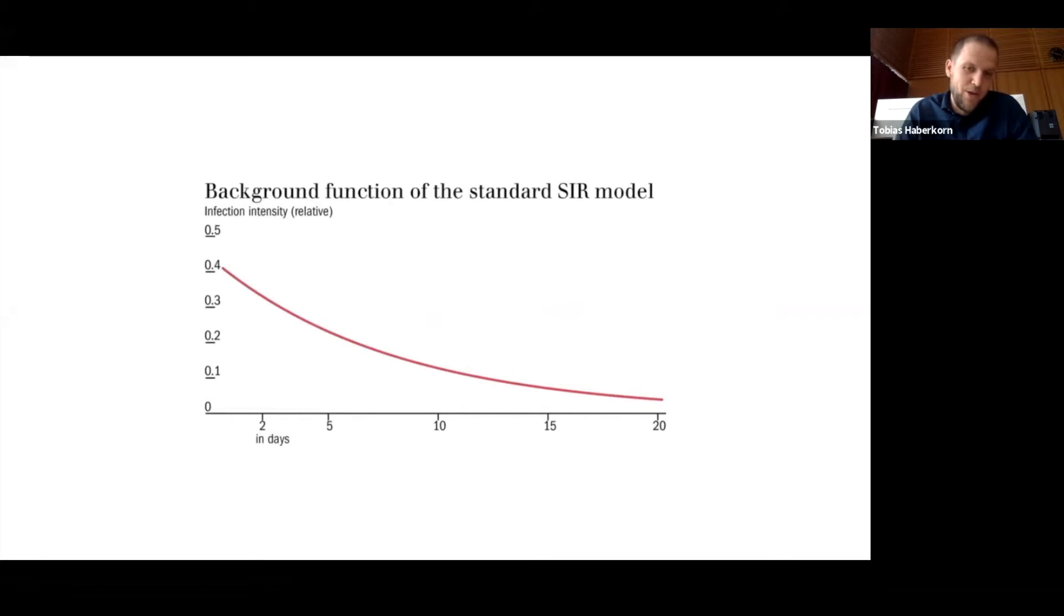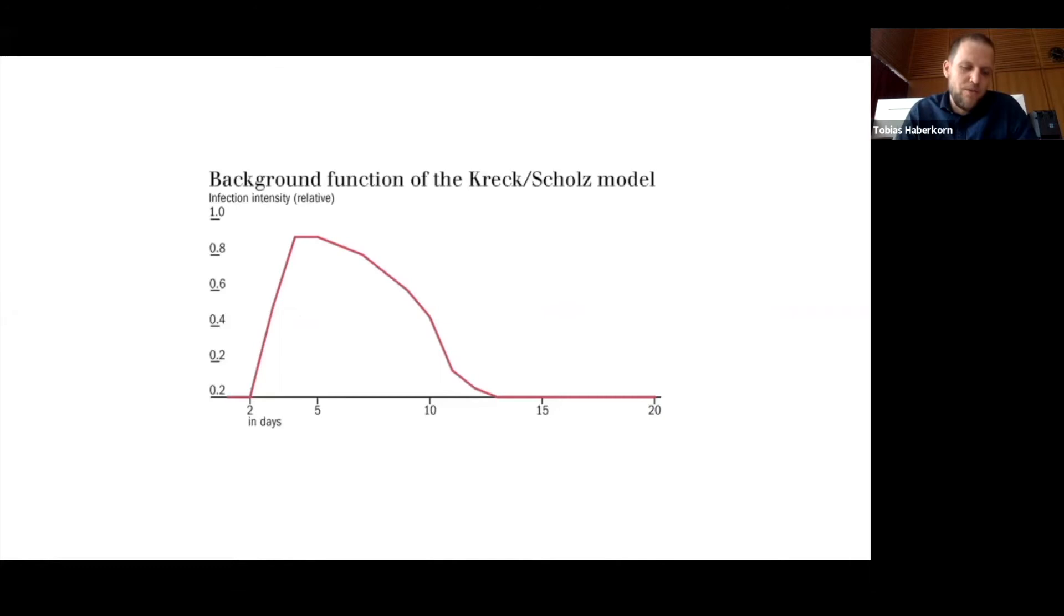Their own model also divides the population into compartments, but they do not go down the same route to deduce the differential equations. They do something that is mathematically different. I won't expand on that here and explain it, but what they do is develop a model where they can include this graph and any other graph in reality for the distribution of the viral load. They model with the starting point of the biological viral load.